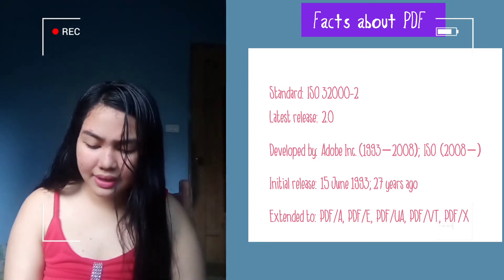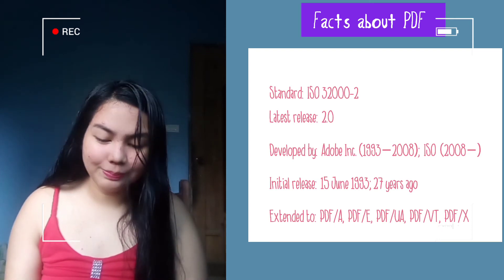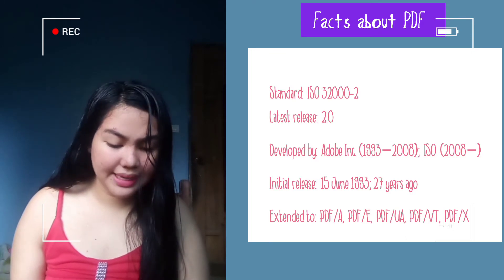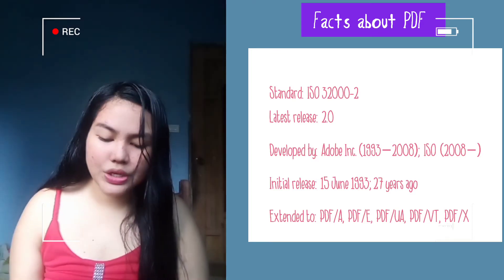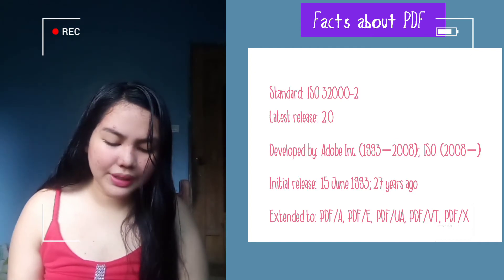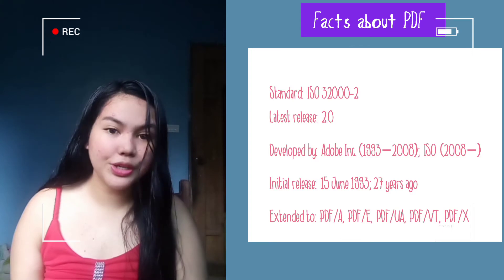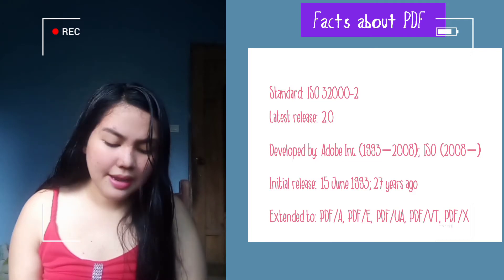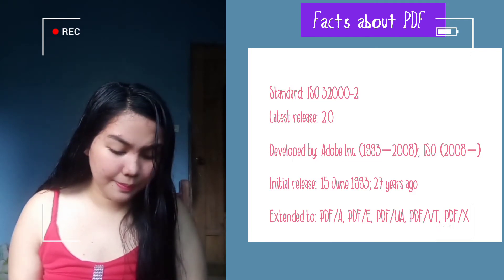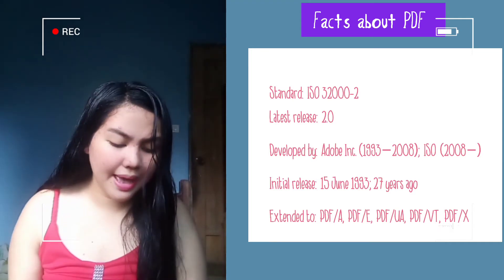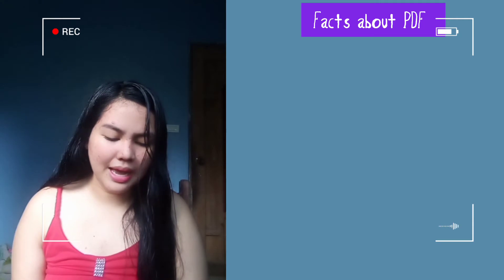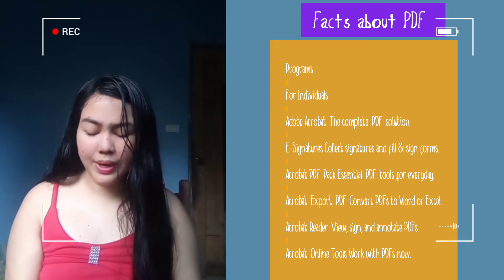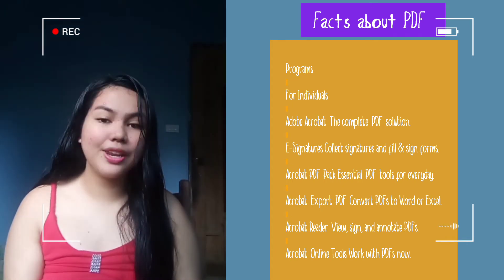The latest release is version 2.0, developed by Adobe and corporation from 1993 to 2008, and by ISO from 2008 onward. The initial release was on June 15, 1993 — 27 years ago. It is extended to PDF/A, PDF/E, PDF/B, PDF/VT, and PDF/X. There are programs for it, including Acrobat — the complete PDF solution.